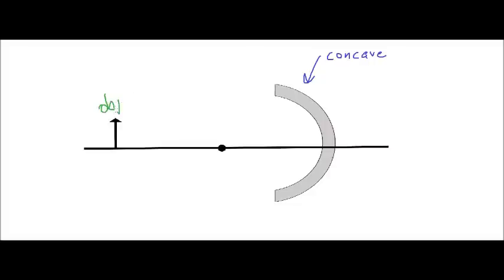This dot here is labeled F, which represents the focal point. The focal point is pretty much where all the light rays are going to meet, or where they're going to appear to meet. So all the rays are going to somehow cross through this area.